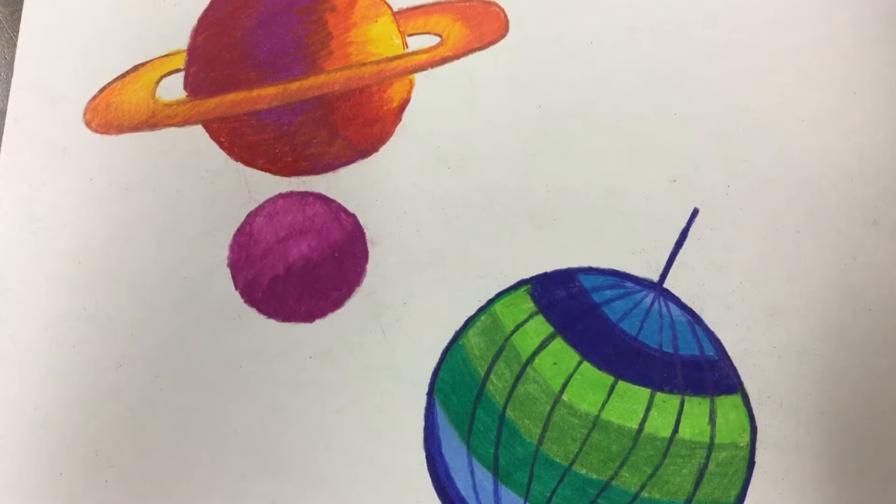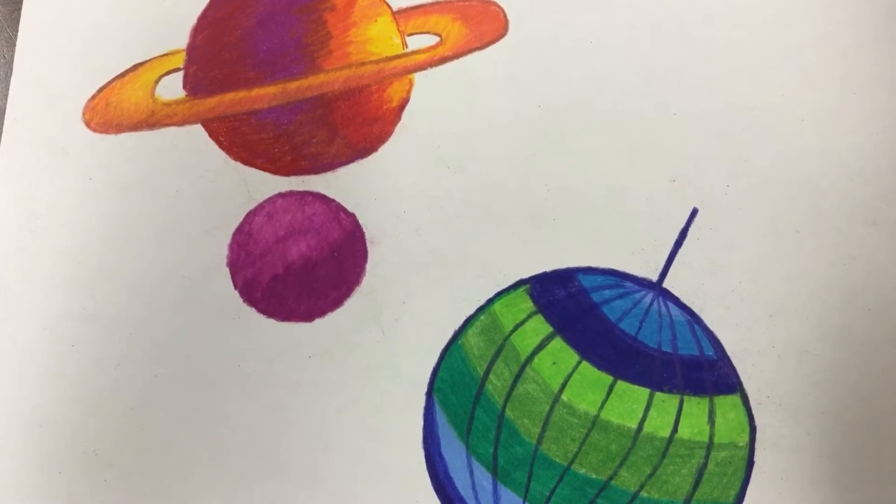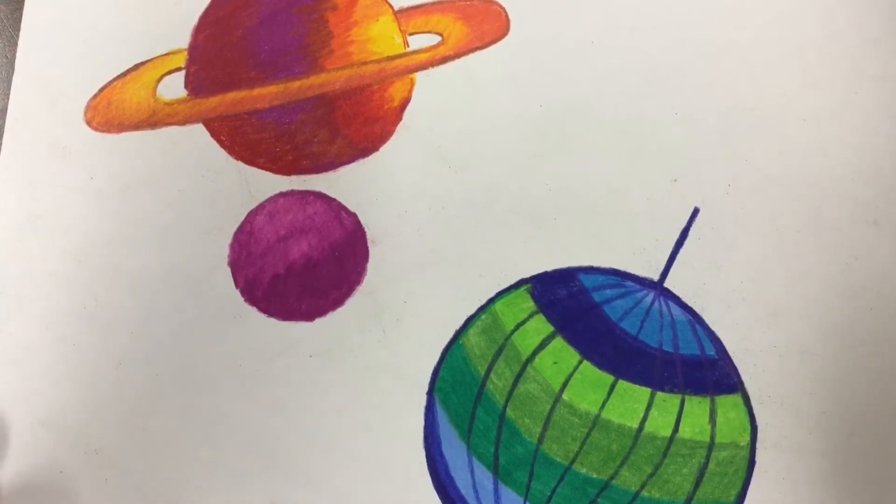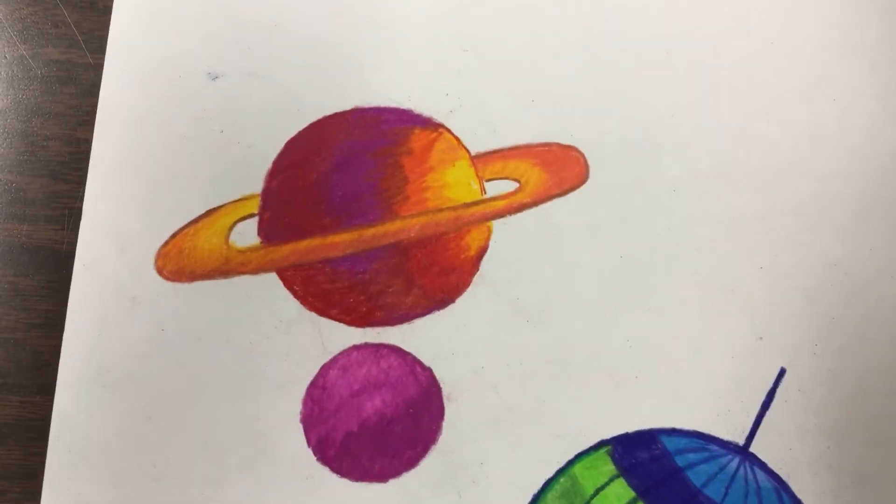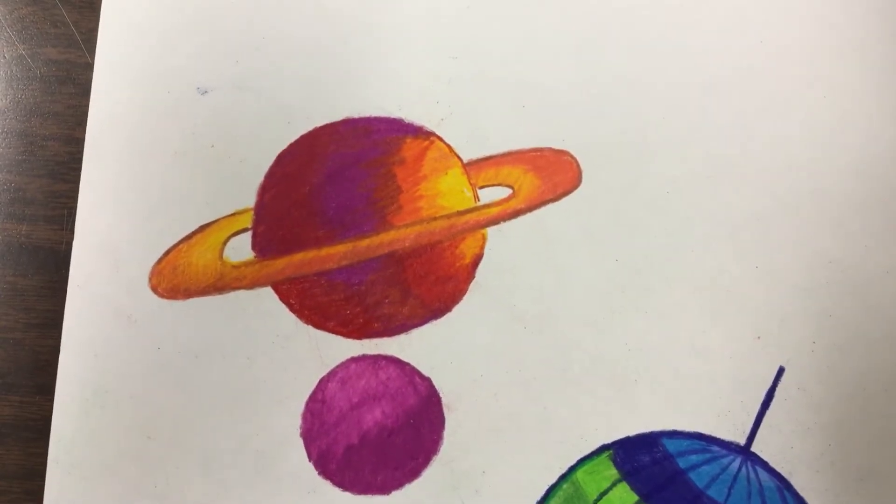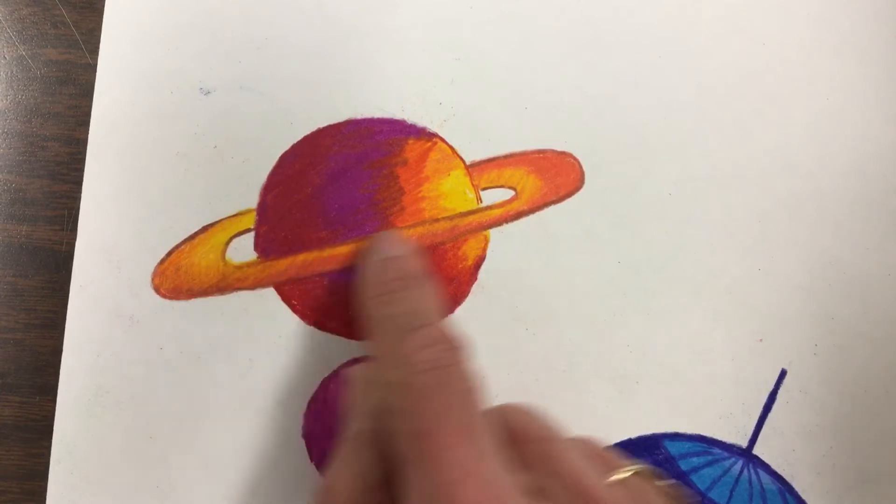I want you to Google the solar system and look up all the planets. One of the planets that everybody wants to know how to draw is Saturn. Everyone thinks Saturn is the coolest because of the rings around it.